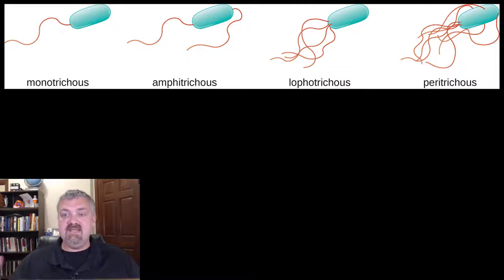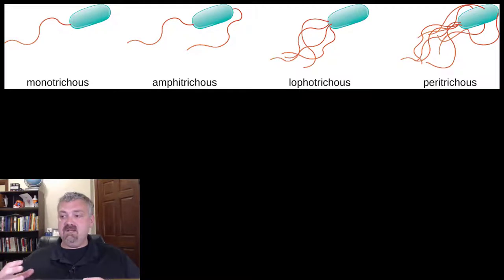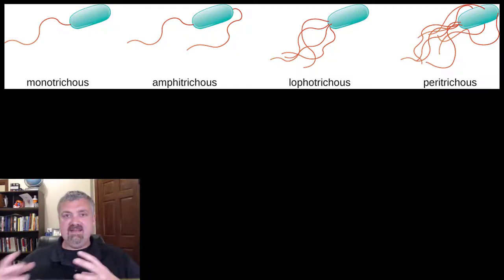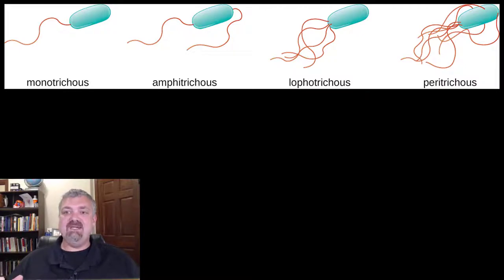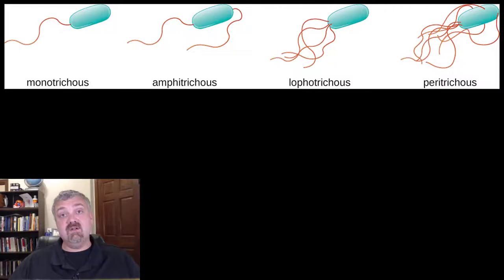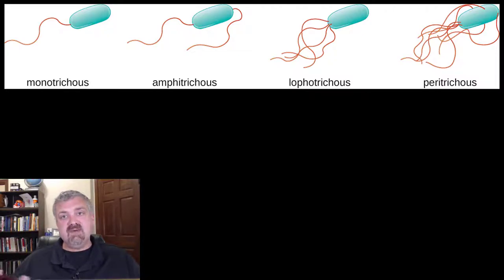The peritrichous flagella all over the place has even been used in movies like The Matrix to make those — I think they're called sentinels — these alien robot creature things. But actually not only their structure but how they move, the run and tumble, which we'll cover in a separate video, is actually what they were modeled after.